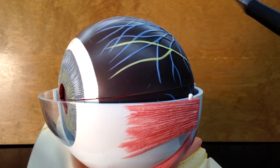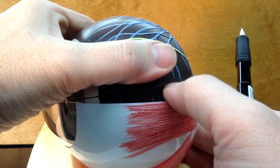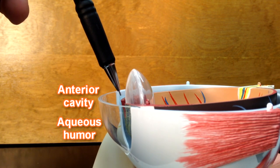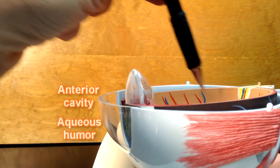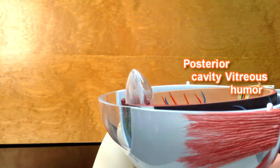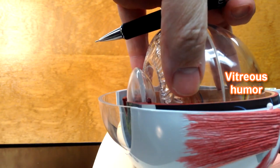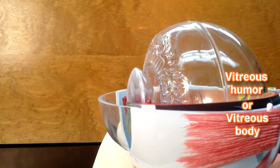If we were to open this part of the model, in the anterior cavity, we have aqueous humor in here. But back here in the posterior cavity, we're going to have vitreous humor. This structure right here represents the vitreous humor or vitreous body.